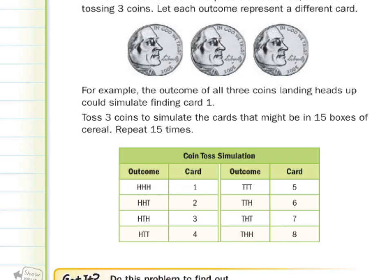Head, head, head could be one, head, head, tail could be two, and so on. That's modeling an experiment. We're not actually asking you to do the experiment, but that could be an experiment that you could use to model this example.